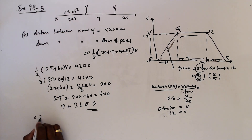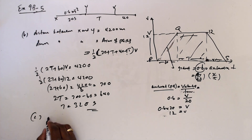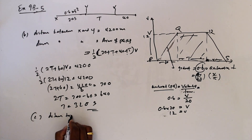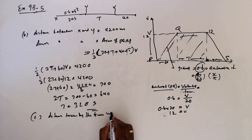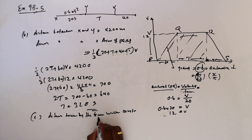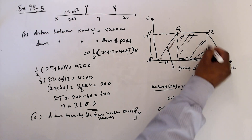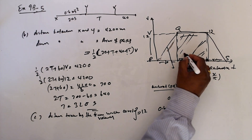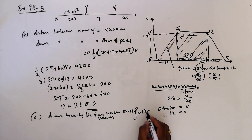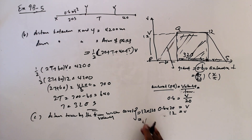Part c: find the distance traveled by the train at constant velocity. This equals the area of the rectangle with height 12 and length 320. Distance equals 12 times 320 equals 3840 meters.